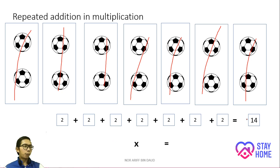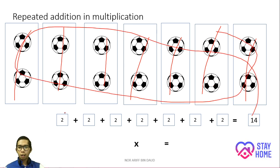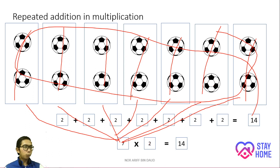Let's check whether 14 is correct or not: 1, 2, 3, 4, 5, 6, 7, 8, 9, 10, 11, 12, 13, 14. So we have 14 balls here all together. The number sentence for this is 7 times 2 equals 14. 7 stands for 7 groups of balls, and 2 means 2 balls in each group. 14 is the total of balls we have here all together.